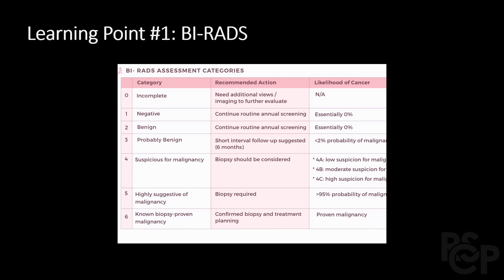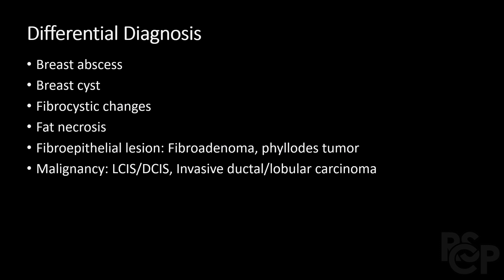This can be contrasted with categories five and six — highly suggestive of malignancy or biopsy-proven malignancy — where a biopsy is going to be required or has already confirmed the diagnosis. Before we get that biopsy, we can think a little bit about a differential diagnosis. So what could this lesion be?